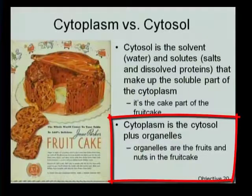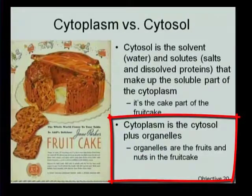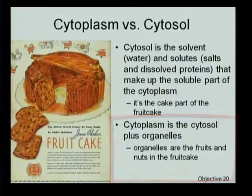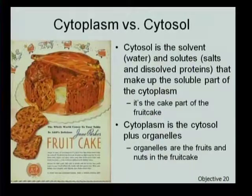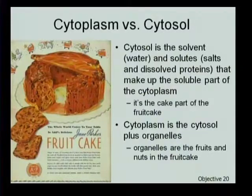Cytoplasm is the cytosol — the salt solution and protein solution — plus the organelles. It's the organelles that we're going to discuss in the next few objectives. In this analogy, the organelles are like the fruits and nuts in the fruitcake.